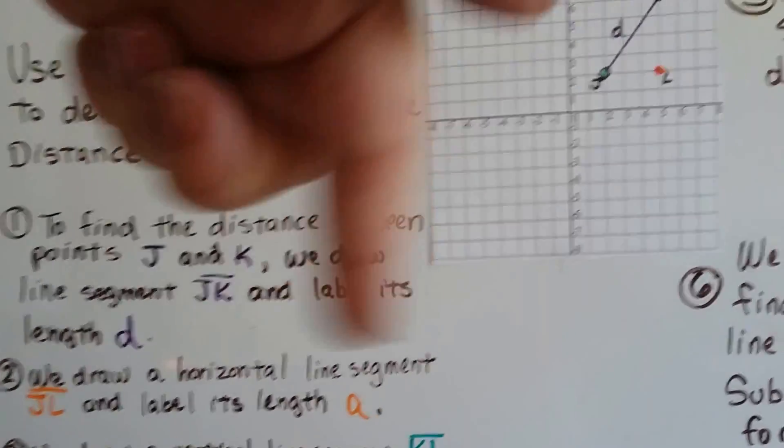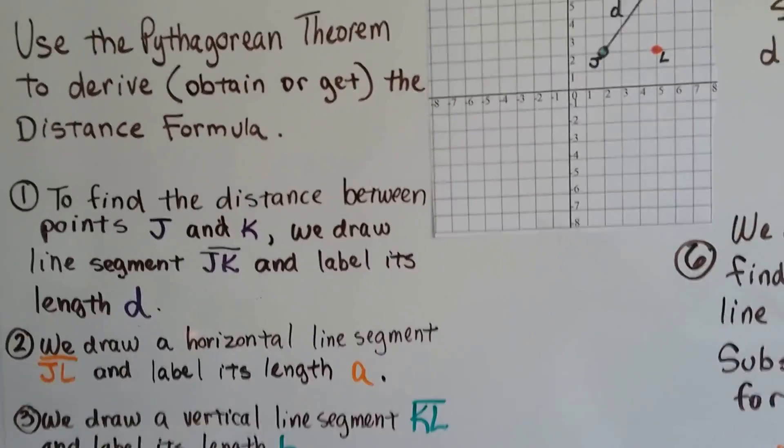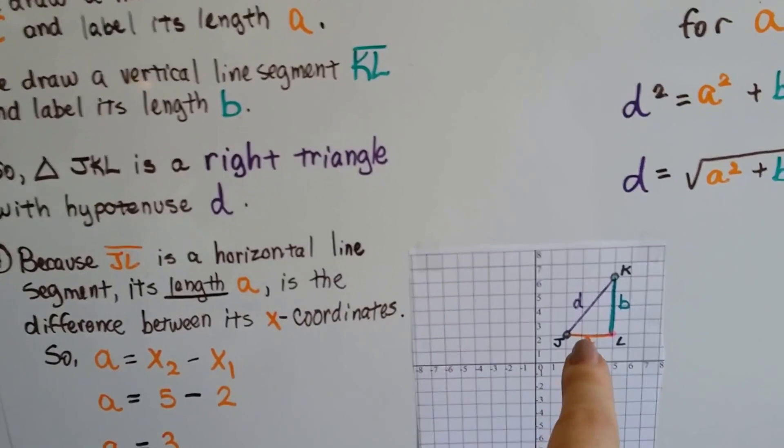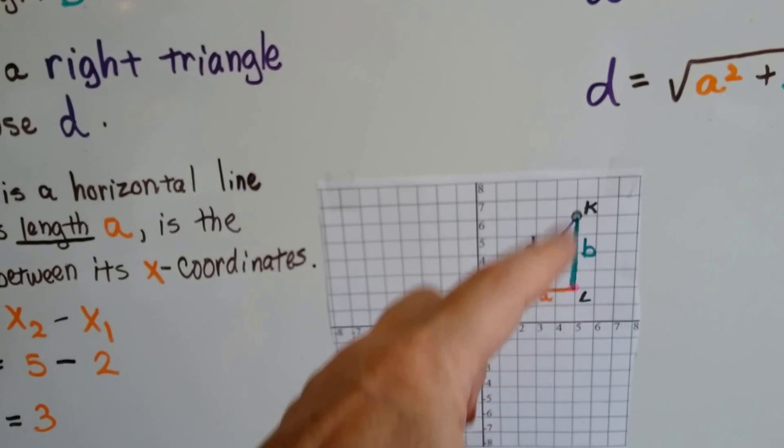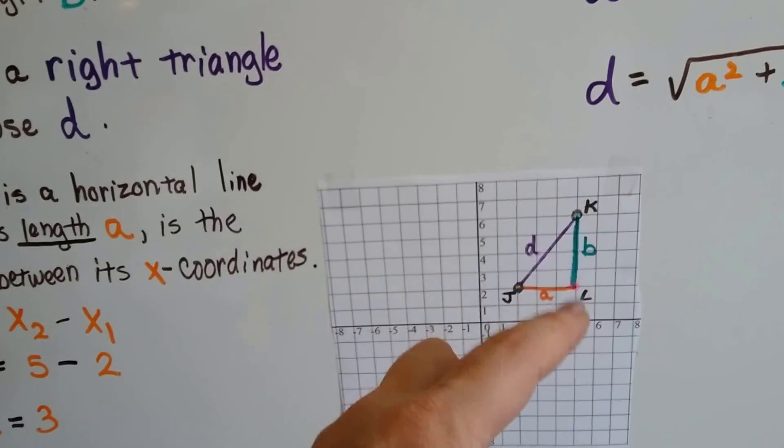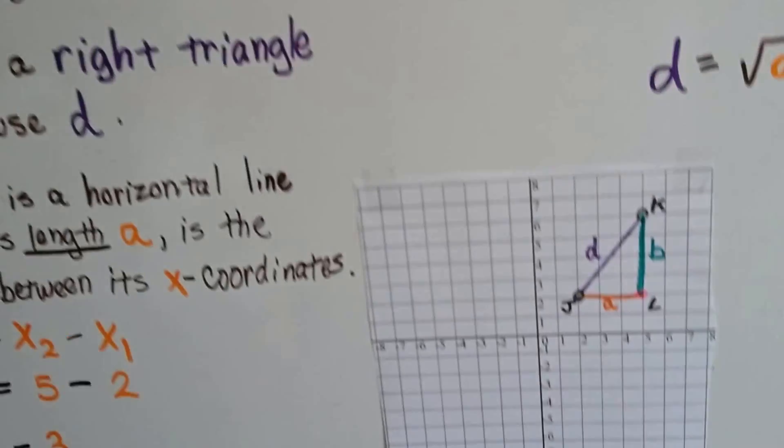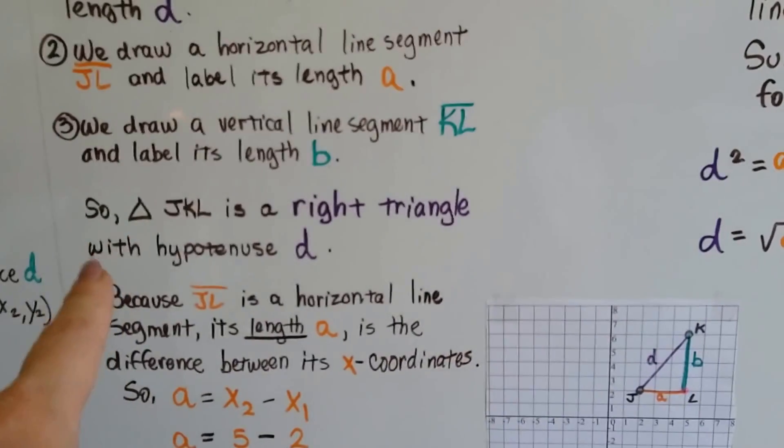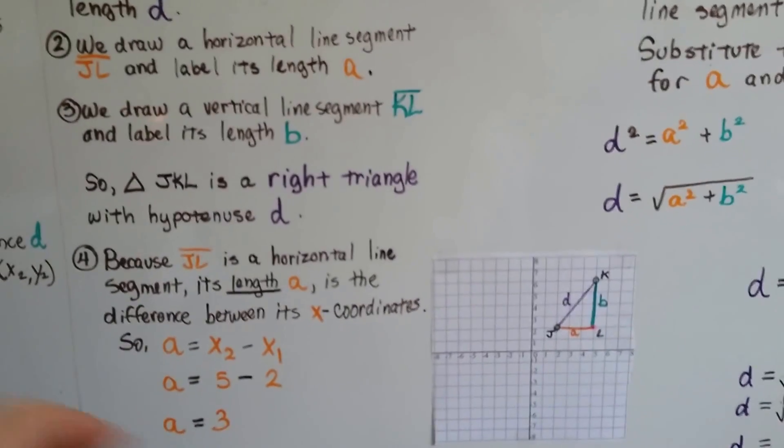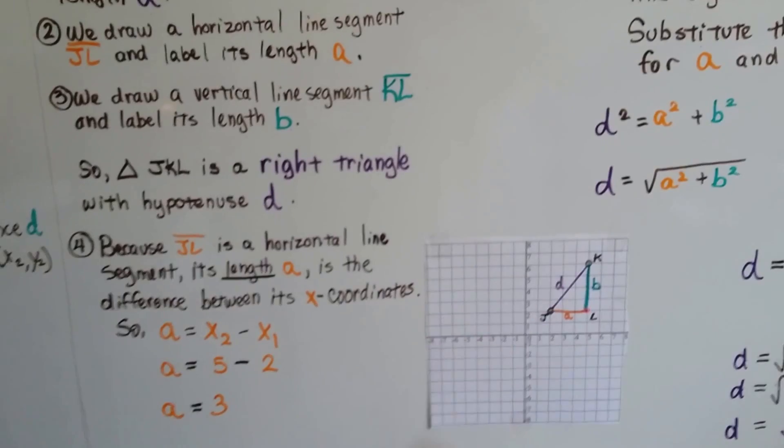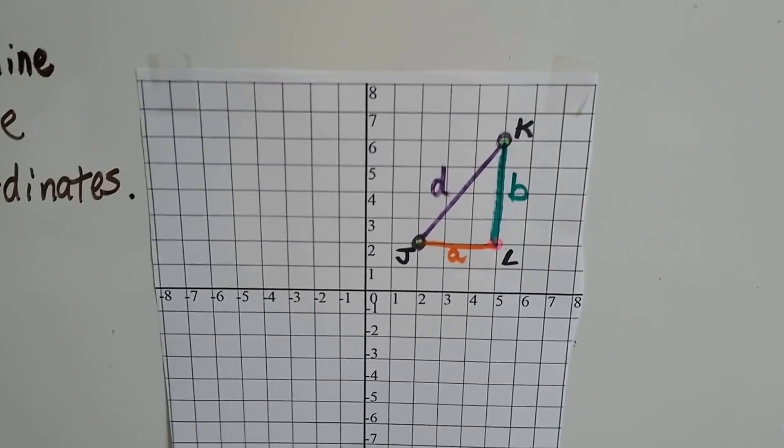We draw a horizontal, that's going side to side, line segment jl right here, and we're going to label its length a. So now we're right here. The orange one is the horizontal. Now we're going to do the b, the vertical. That's the line segment between k and l, and we're going to label its length b. Now, we've got triangle jkl is a right triangle with hypotenuse d. Look at that. We just created a right triangle with hypotenuse d.